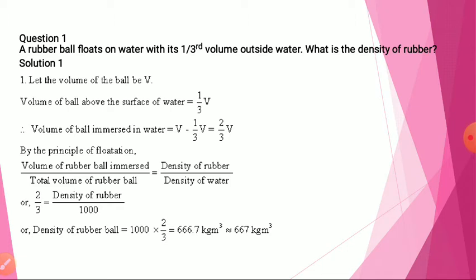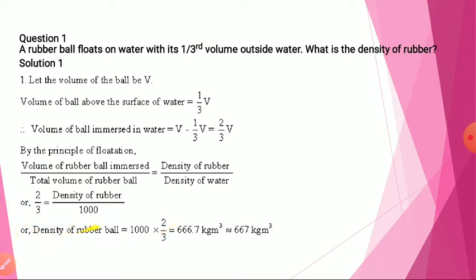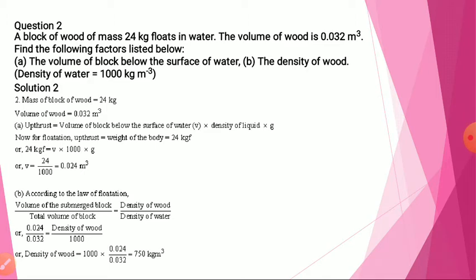With the help of this we will put the values. Volume of rubber ball immersed is two-thirds V and total volume of ball is V, so we cancel out and get two-thirds. Density of rubber we don't know; density of water we know, that is 1000. So by this we will get density of rubber ball as 667 kilograms per meter cube.